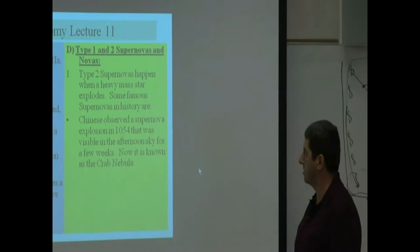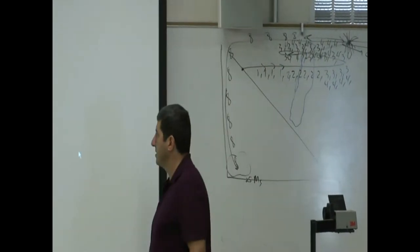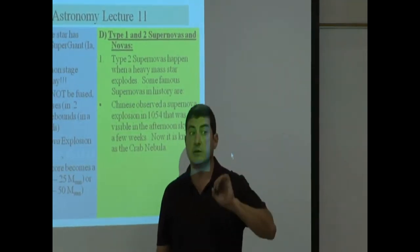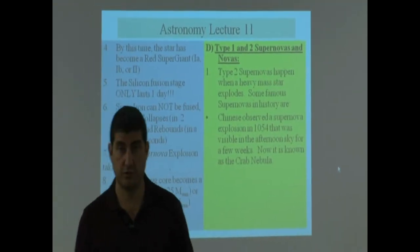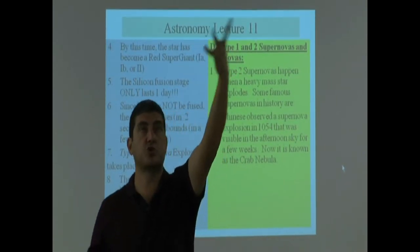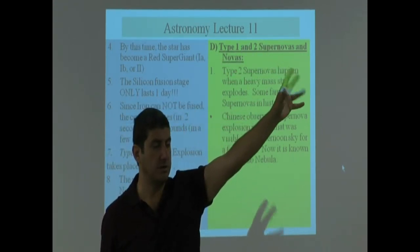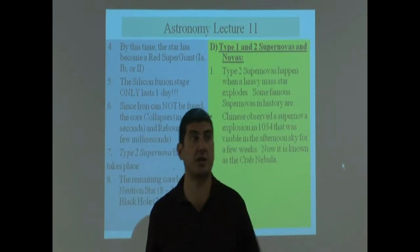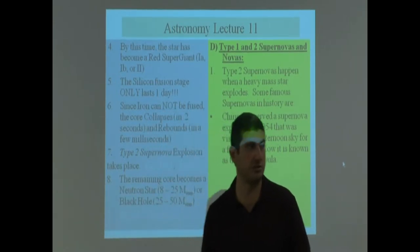Some famous supernovas in history are, this is one of the most famous ones. Chinese observed the supernova explosion in 1054, and imagine they didn't have telescopes back then. How bright must this have been to be visible? Basically what ended up happening is during the day sky, you have a star all of a sudden shining along with the sun. That would be fun for it to happen these days. You would literally see a star during the daytime and go what the heck's going on. They saw that star for several weeks during the day.